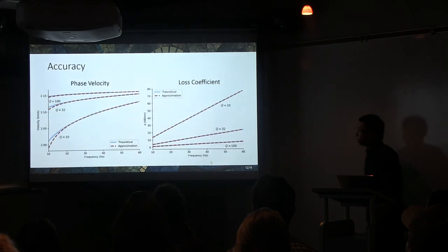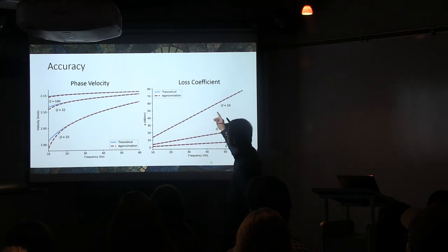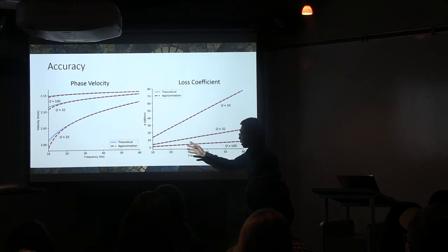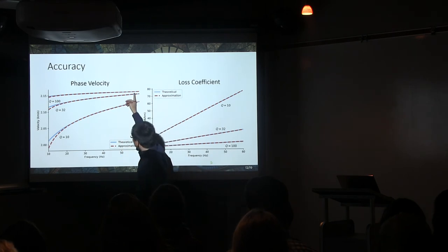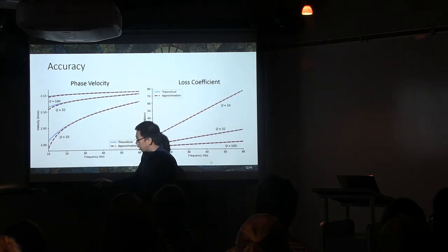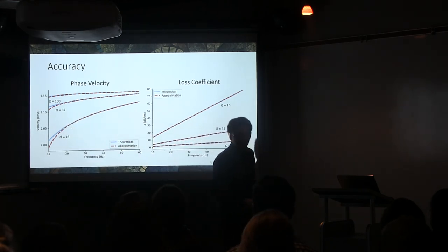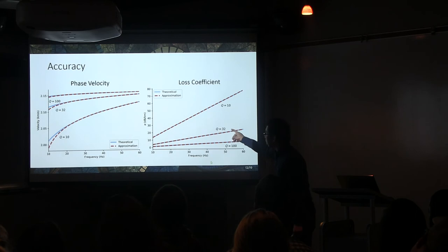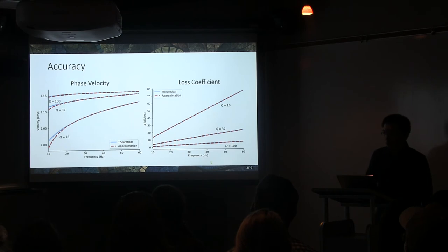And the accuracy of this equation is validated by comparing the theoretical and the numerical solutions. And we do the comparison for both phase velocity and loss coefficient, which corresponds to the two effects, respectively. And we show the case when weak attenuation, Q is 100, strong attenuation, Q is 10, and the realistic case, Q is 32, as at Prudhoe Bay. So, the velocity actually matches pretty good. And moreover, the fitting of the loss coefficient is basically perfect. So, this proves that our equation is pretty accurate.